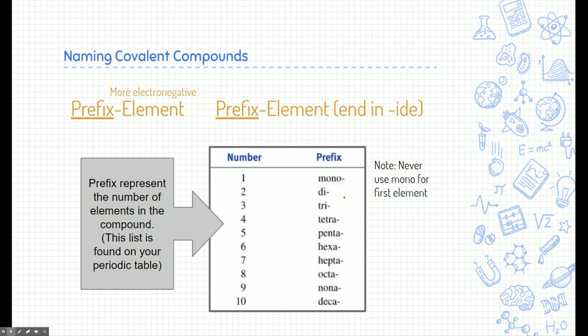And these prefixes are only used for covalent compounds. One thing to note, we don't always use mono. We definitely never use it for the first compound, and sometimes we don't use it for the second, but sometimes we do. But when we name covalent compounds, we include these prefixes before each of the elements in order to figure out how many there are. And we always end in -ide for covalent compounds.